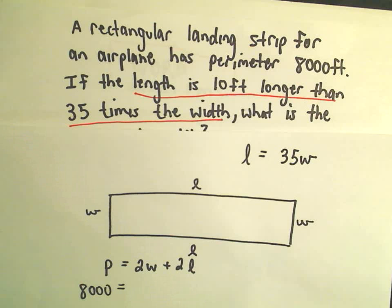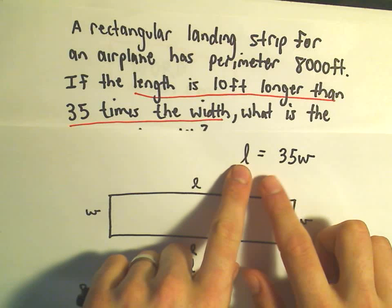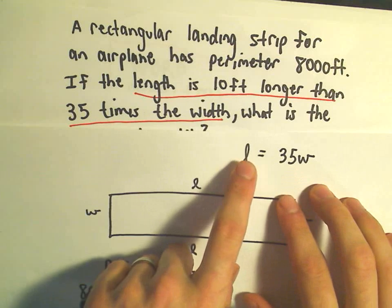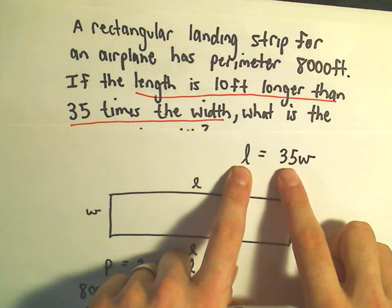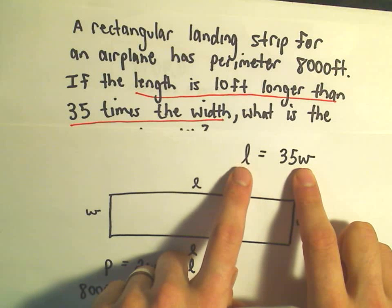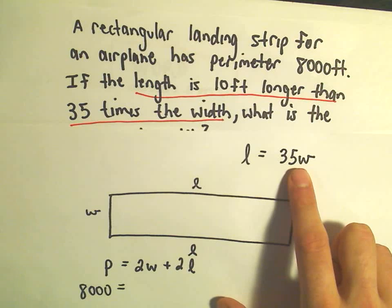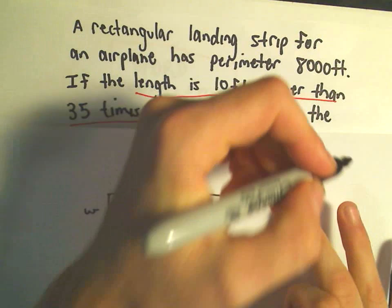And this is where I think a lot of people might make the mistake. The way I think about it is, well, the length is not equal to 35 times the width. It's 35 times the width plus 10. So the length is actually bigger than just 35 times the width. The length is still bigger than this number on the right hand side. So to make everything balance out, I would actually have to add a 10 to the right hand side.